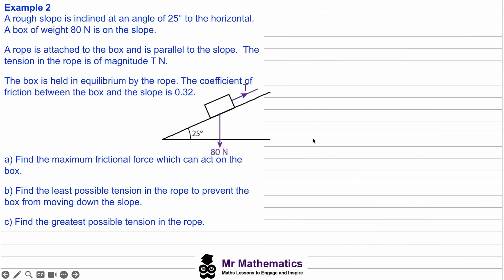In Example 2, a rough slope is inclined at 25 degrees to the horizontal. A box of weight 80 newtons is on the slope with a rope attached, parallel to the slope. The tension in the rope is T newtons and the box is held in equilibrium. The coefficient of friction between the box and the slope is 0.32.